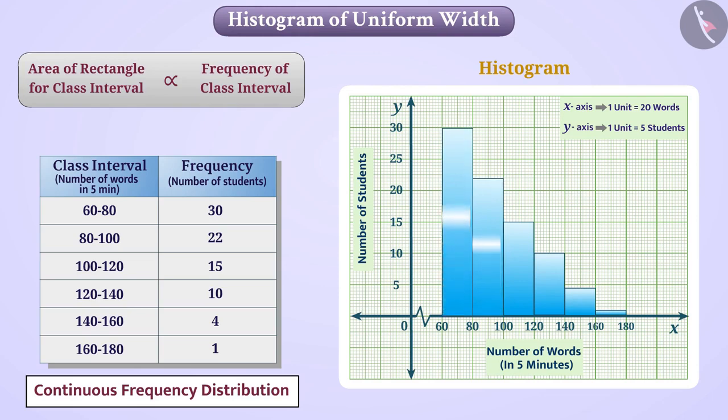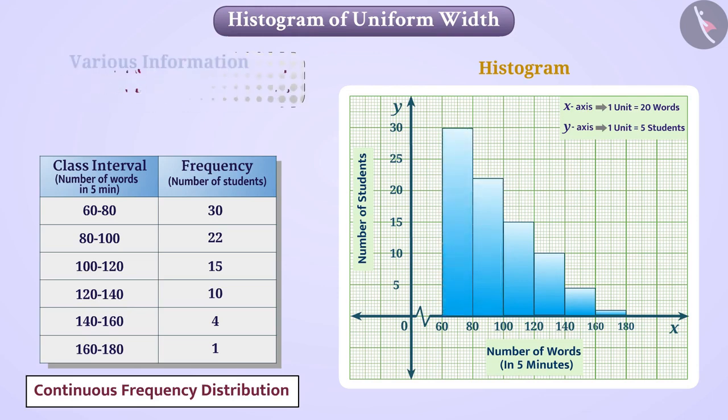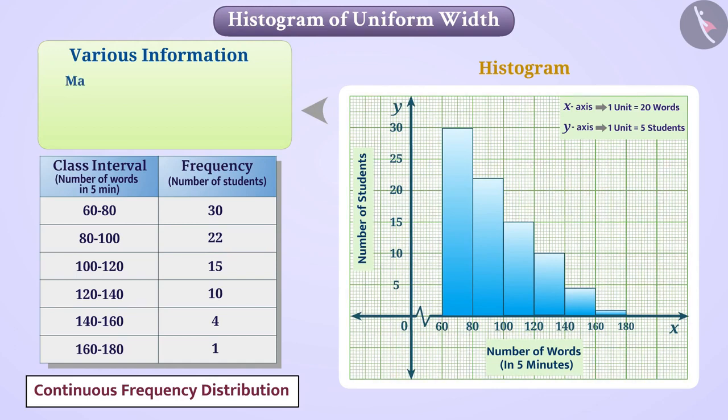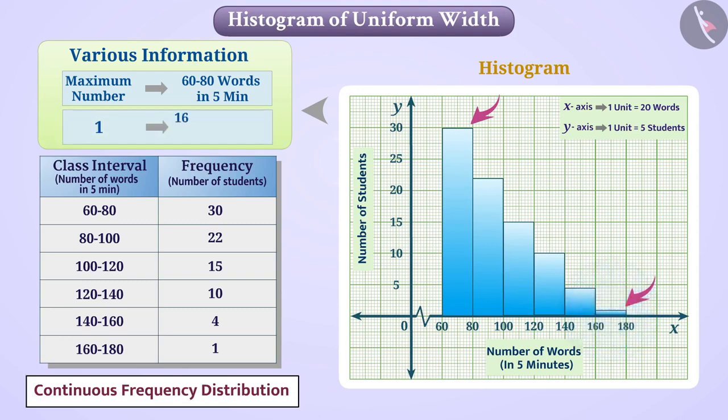Various information can be obtained by looking at this histogram. The maximum number of children can type 60 to 80 words in 5 minutes. We can see that only one student types 160 to 180 words in 5 minutes.